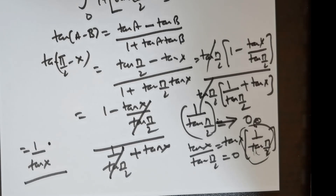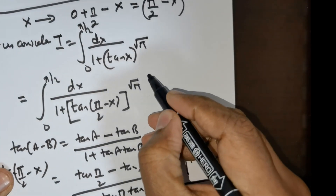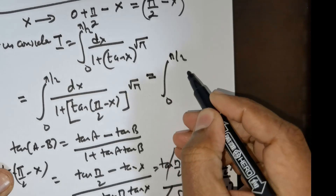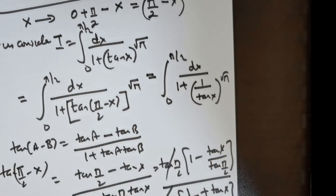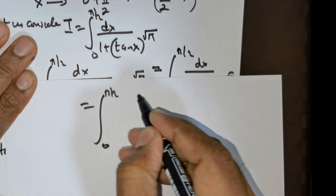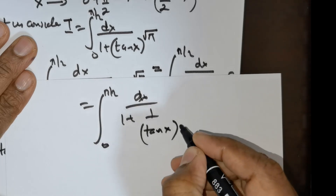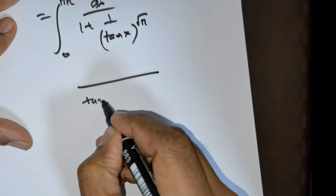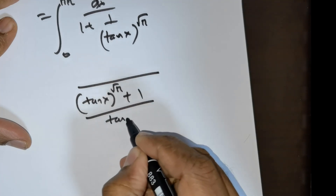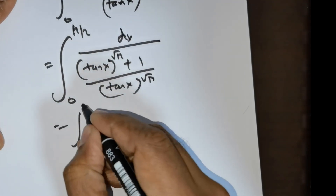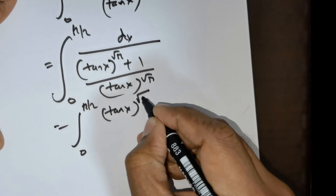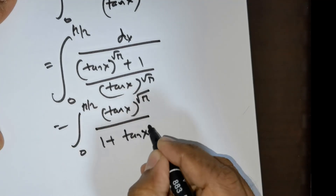So now what we have is I equals the integral from 0 to π/2 of dx divided by (1 + (1/tan x) raised to the power of root of π). Taking the common denominator, this becomes the integral from 0 to π/2 of tan^√π(x) divided by (tan^√π(x) + 1) dx. Let us call this equation 2.